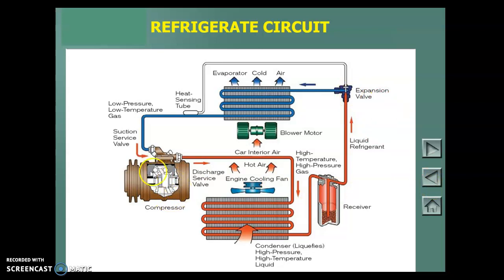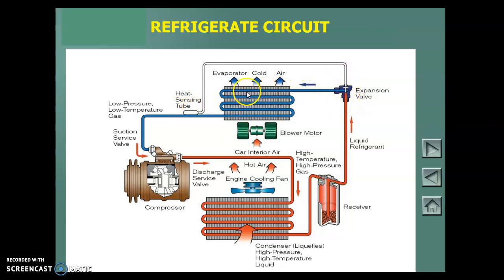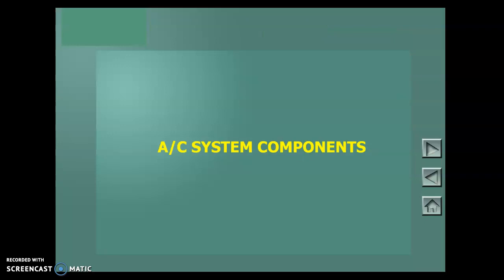To recap: the compressor makes pressure and pumps refrigerant through to the condenser, where the gas condenses to a liquid and rejects the heat. It then comes through and dumps to the bottom of the receiver dryer — only liquid goes up to the expansion valve. The orifice changes size based on the heat-sensing tube's temperature to make sure all the refrigerant going through the evaporator boils and becomes gas. It comes through as pure gas — no liquid — to the compressor with all the heat from the passenger compartment, plus heat from compression, then goes back through and dumps in the condenser.